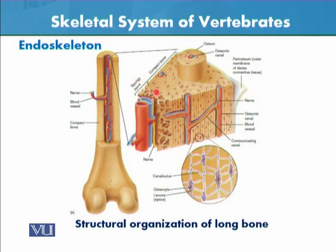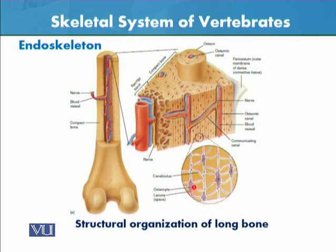This is a large vertebrate bone showing spongy bone and hard compact bone. The hard part of the bone is composed of structural units called osteons. In the center there is a blood supply, and the osteonic canals surround the cavity — jo ke darmiyan mein bone marrow ko surround karte hain. The osteocytes are located within the lacunae, which are interconnected by canaliculi. The remaining matrix has been impregnated with calcium and phosphate, jis ki wajah se bone ka structure bahut hard hai. This is the histology of the compact bone.